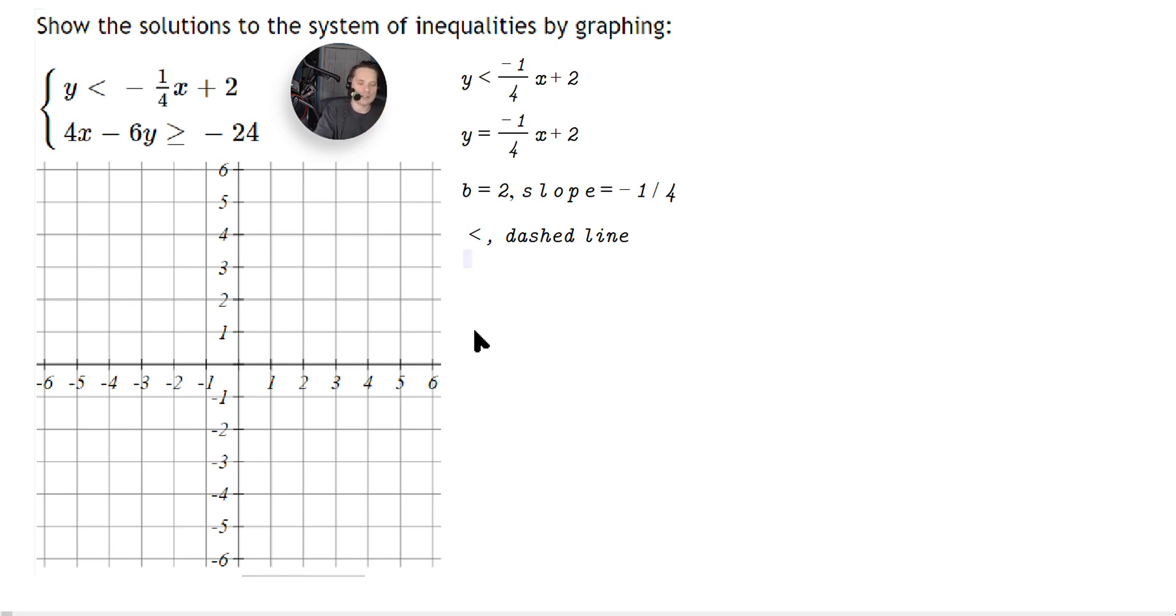So you can always choose zero, zero as your test point, and you just plug it in. So zero less than negative one-fourth. Plug it into the original inequality, not into anything else. That's how you avoid any mistakes. Times zero plus two. So zero less than two. Well, this is true, isn't it? That's important to understand because it's telling you're going to have to shade where zero, zero is located in that region.